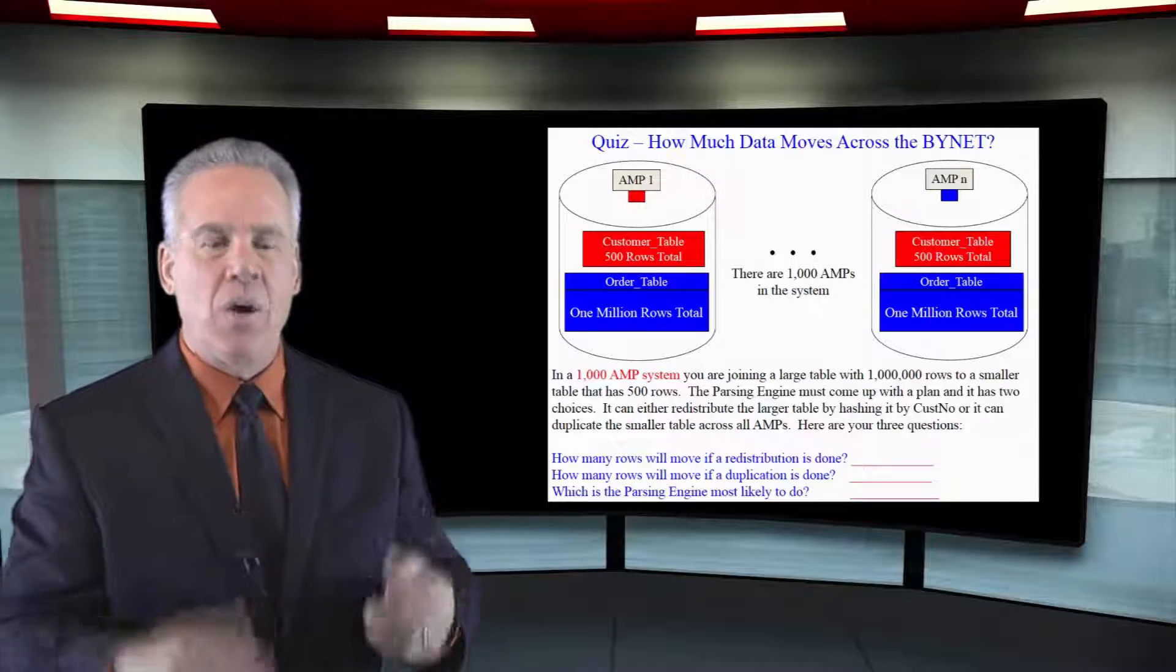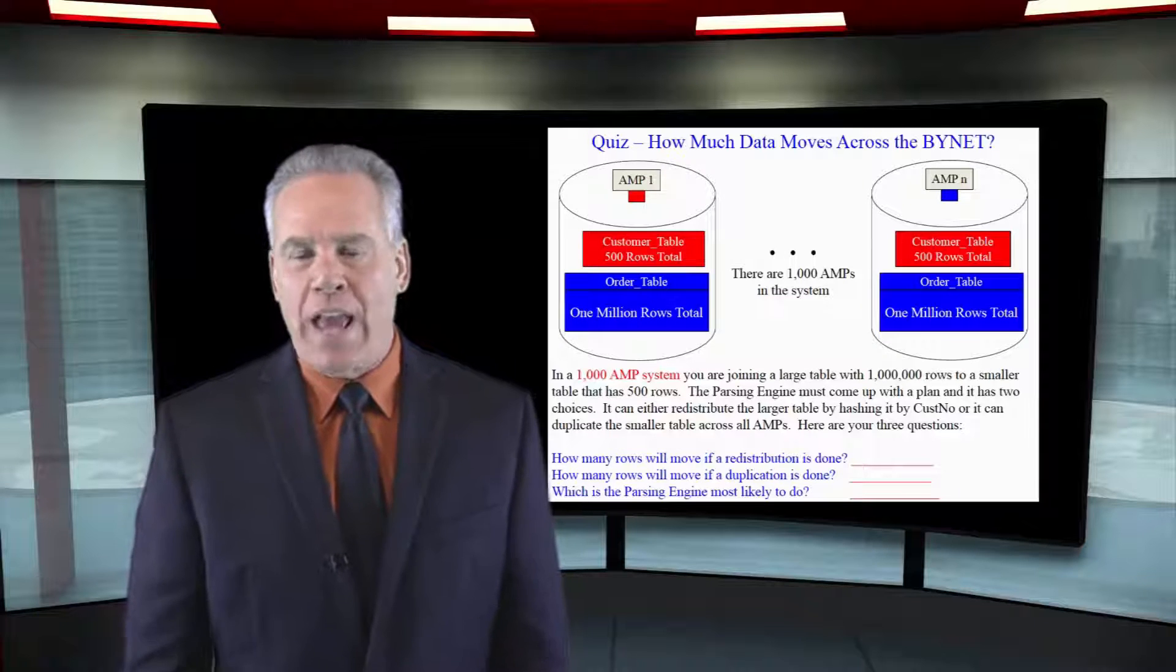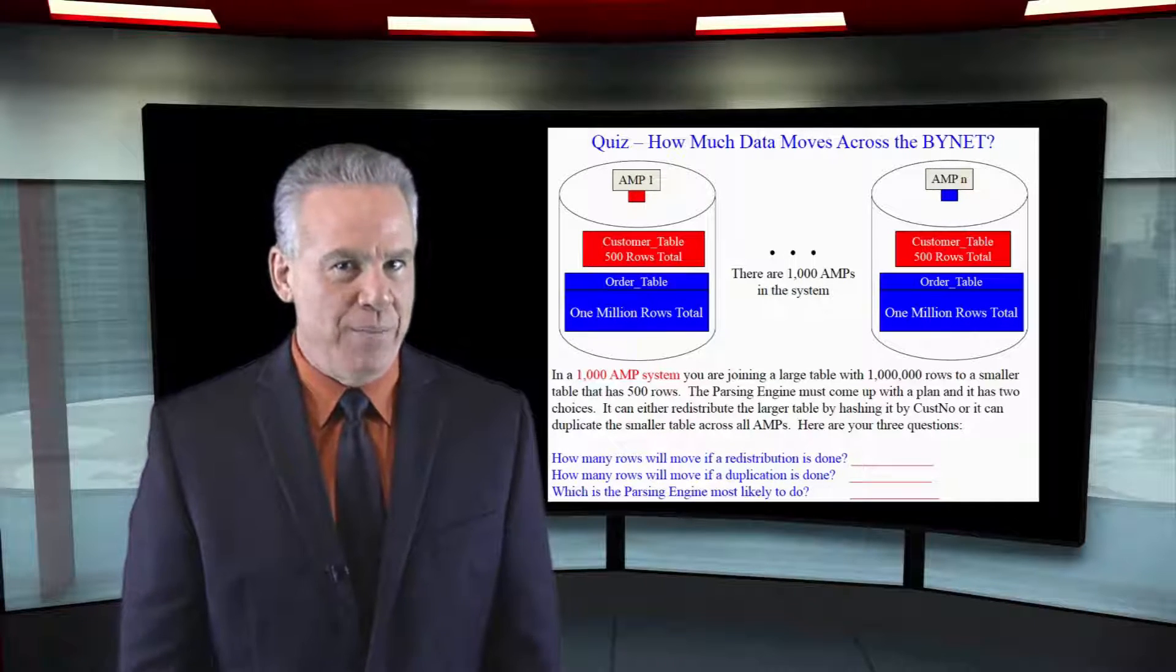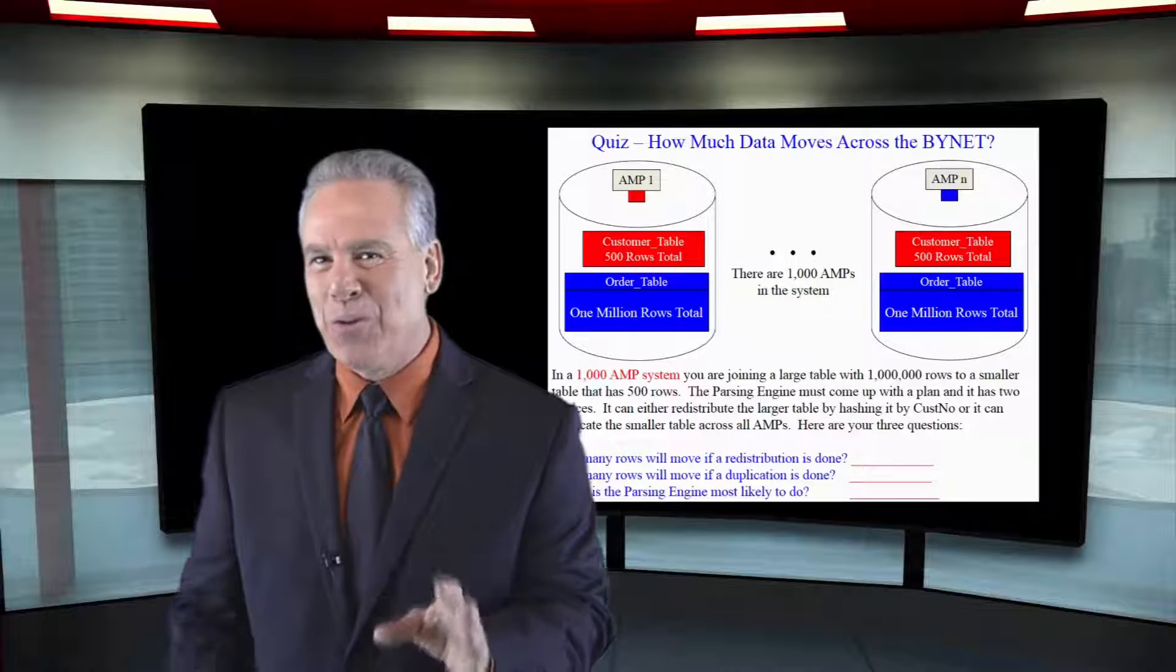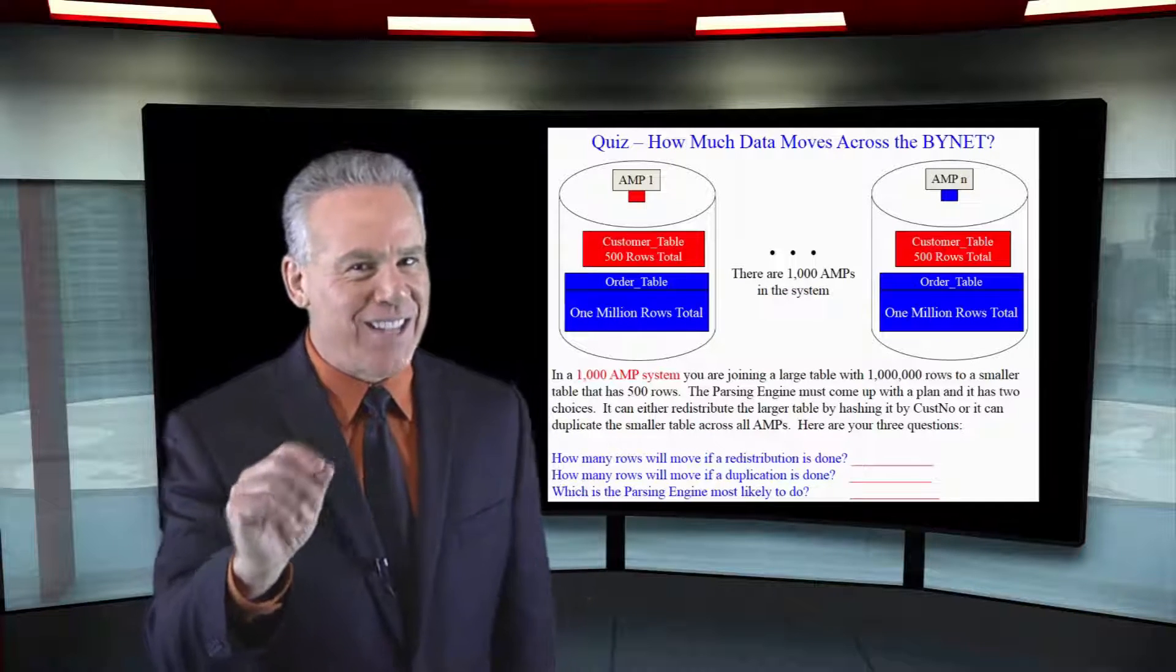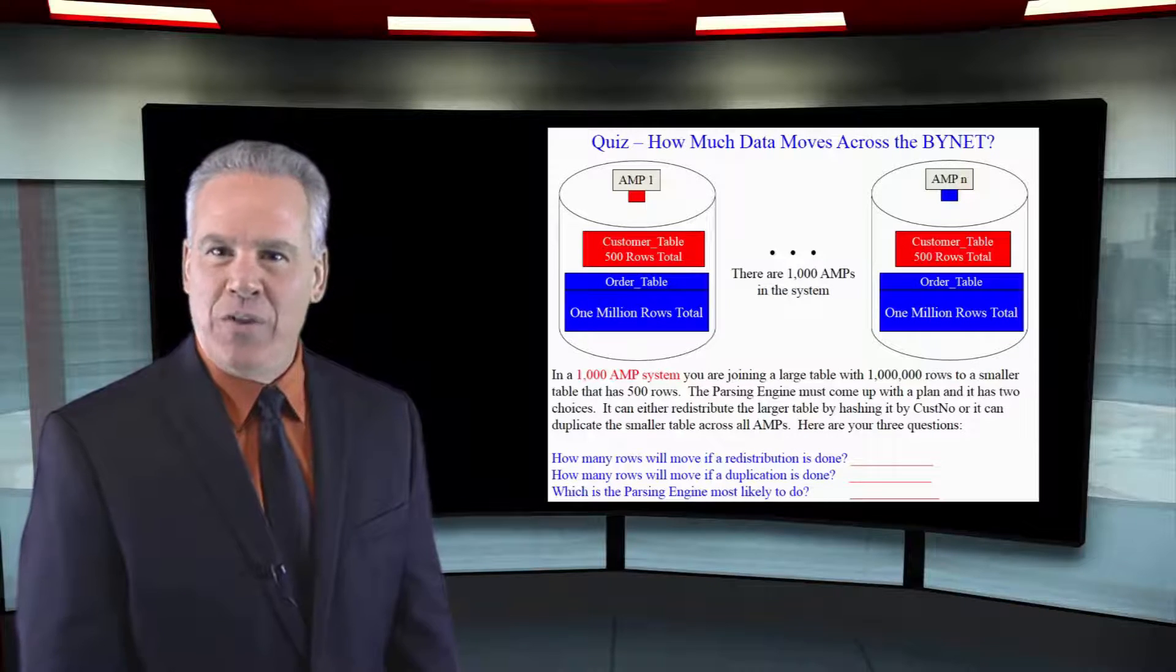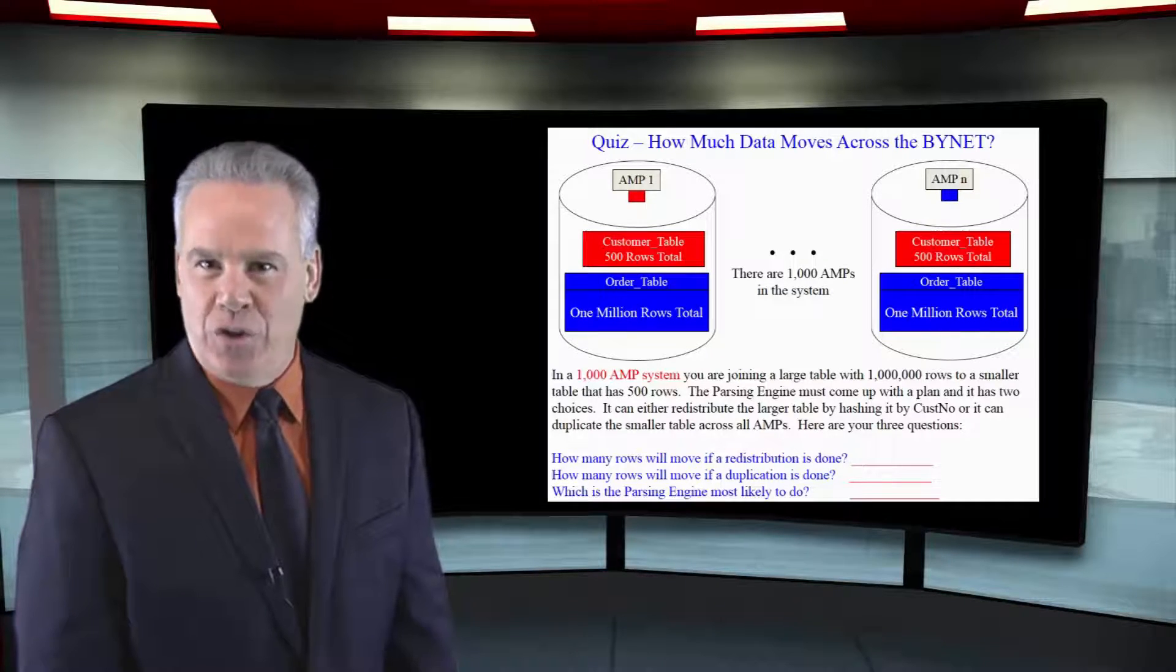In each scenario, how many rows will have to be moved if they do a duplication of the smaller table? And how many rows will be moved if the parsing engine says, I'm going to redistribute the larger table? And what do you think the parsing engine's going to choose?